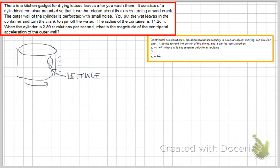So the issue with this problem is that we want to calculate the centripetal acceleration, which is the acceleration of a point. If it were a piece of lettuce that got stuck onto the wall, it would be the acceleration of the lettuce.